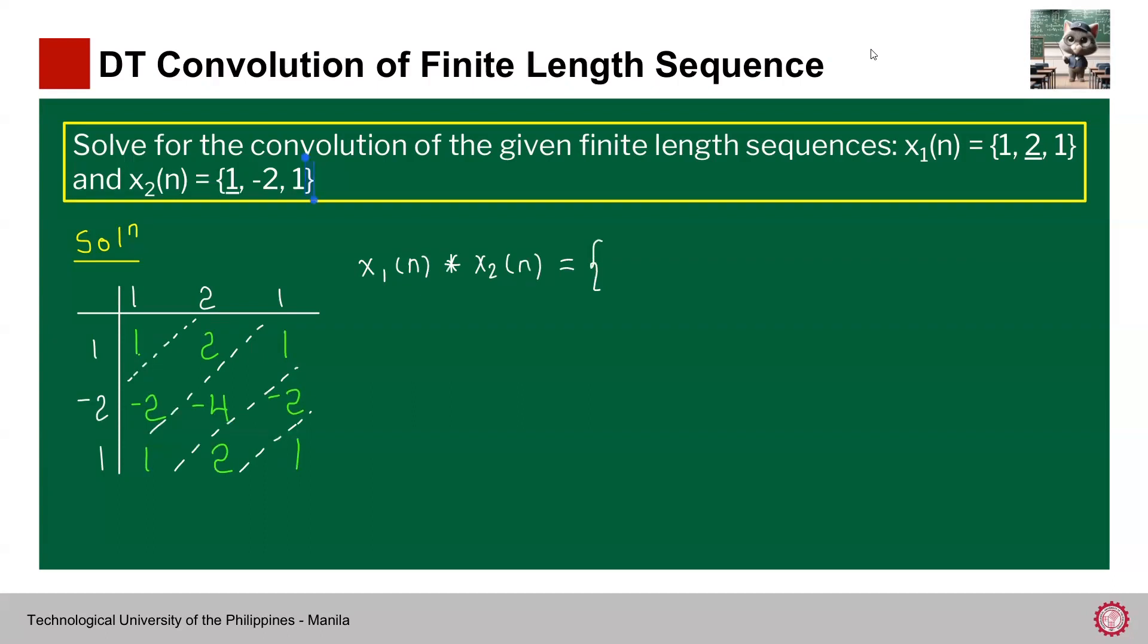The result will also be a finite-length sequence, of course. For the first diagonal, it contains 1, so you'll just simply write 1. Next we have negative 2 plus 2, so that is 0. Then we have 1 minus 4 plus 1, so that is negative 2. Next, we have 2 plus negative 2, we have 0. And finally, 1 is the last one, so we have 1. So this would be the result.